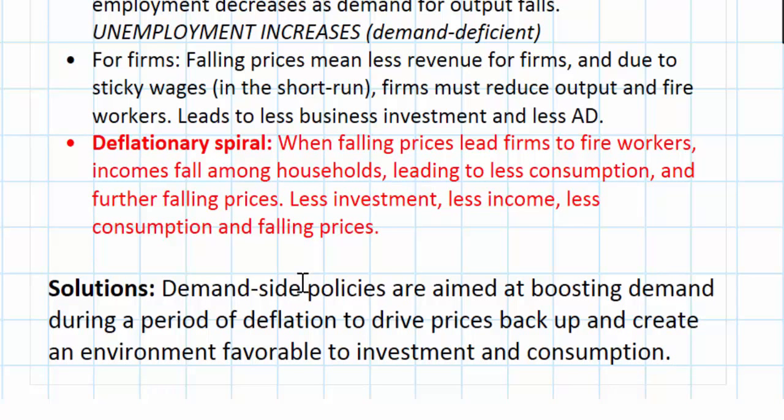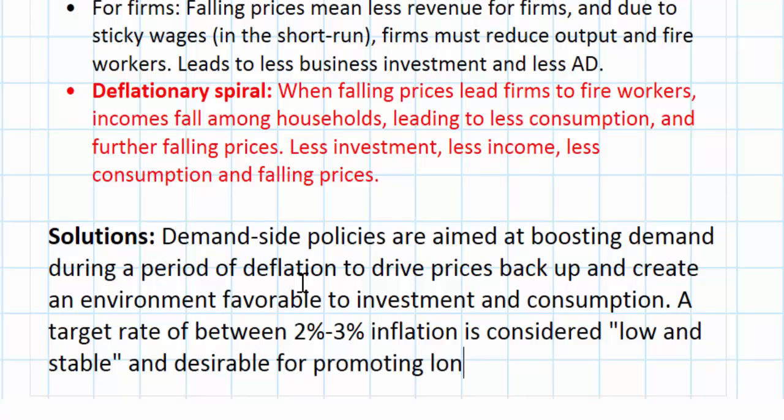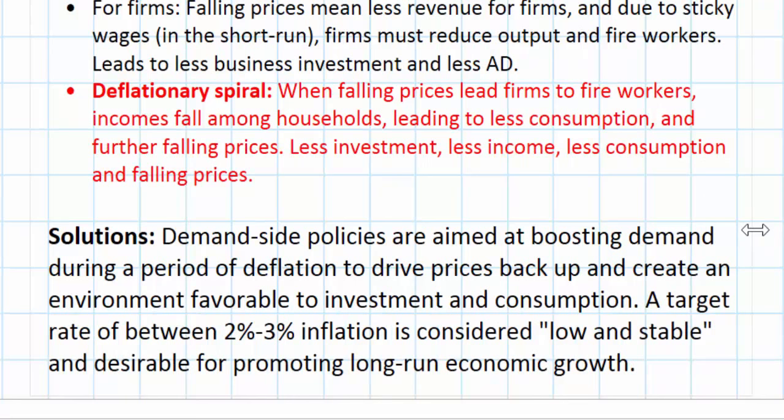Anything more than that might signal to households that we should expect further price increases, leading to increasing consumption and an inflationary spiral. A target rate of between 2-3% inflation is considered low and stable and desirable for promoting long-run economic growth. Demand-side policies are commonly used to counteract the deflationary pressures that the free market might be promoting in an economy.